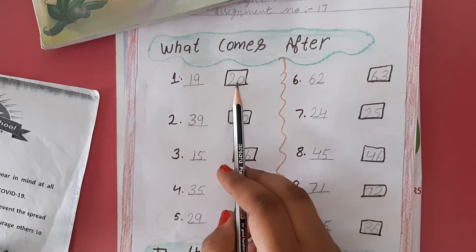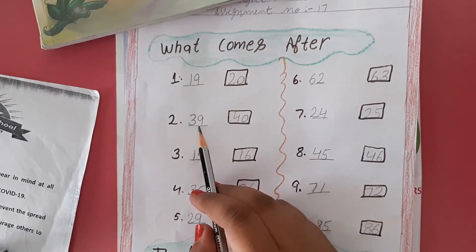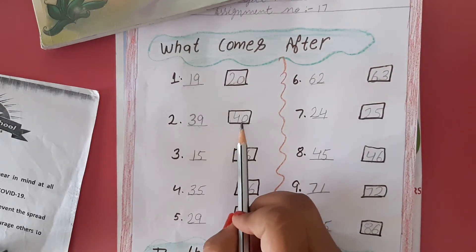Here, 39 is given. What comes after 39? That is 40. So we will write here 40.